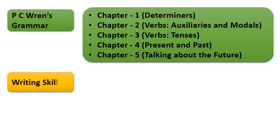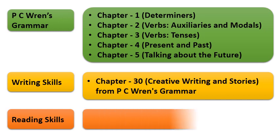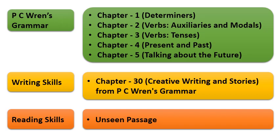Next is writing skill. Chapter 30, that is Creative Writing and Stories. It is taken from P.C. Wren's Grammar Book. Next is reading skills. In this, unseen passage will be there. So this is your syllabus for UT 1.